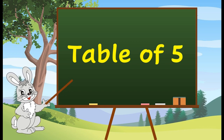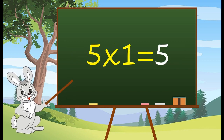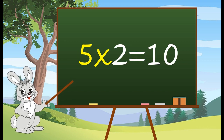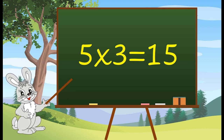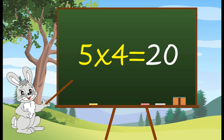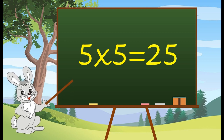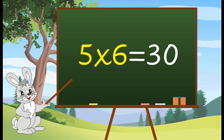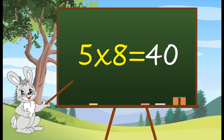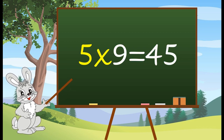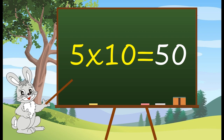Table of 5. 5 1's are 5. 5 2's are 10. 5 3's are 15. 5 4's are 20. 5 5's are 25. 5 6's are 30. 5 7's are 35. 5 8's are 40. 5 9's are 45. 5 10's are 50.